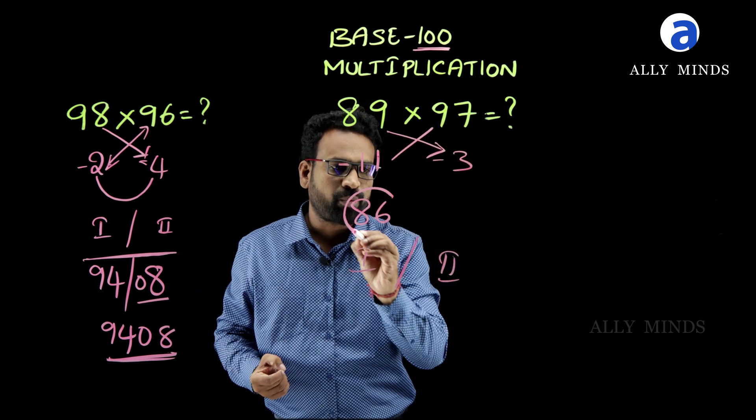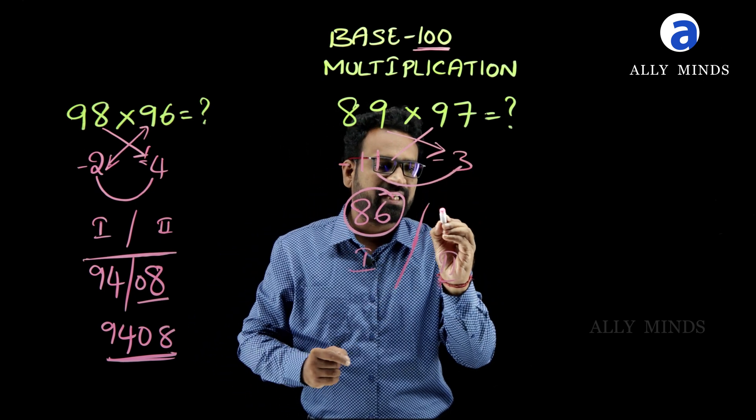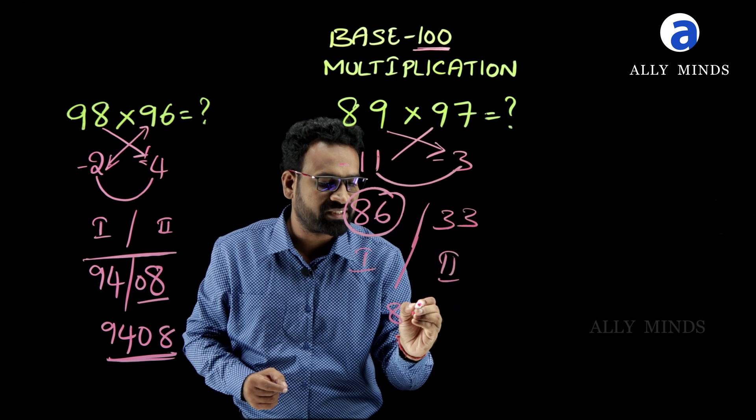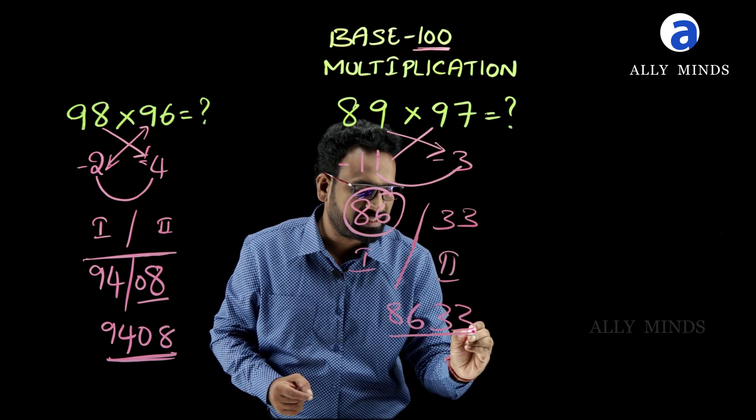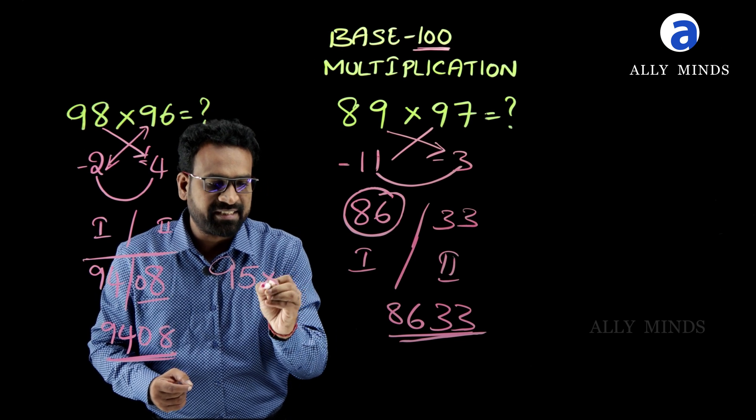This is the first part. For the second part, just multiply these two numbers. Minus 11 times minus 3 is plus 33. So our answer is 8633. This is the final answer. And 95 times 96,